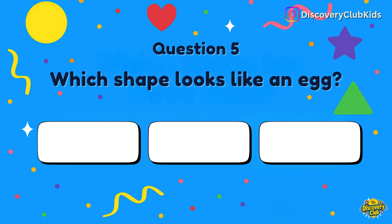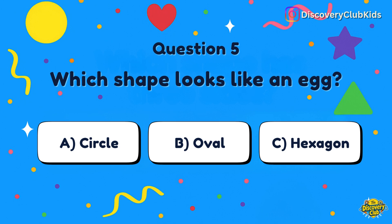Next question: Which shape looks like an egg? Choices are circle, oval, or hexagon. The correct one is oval.